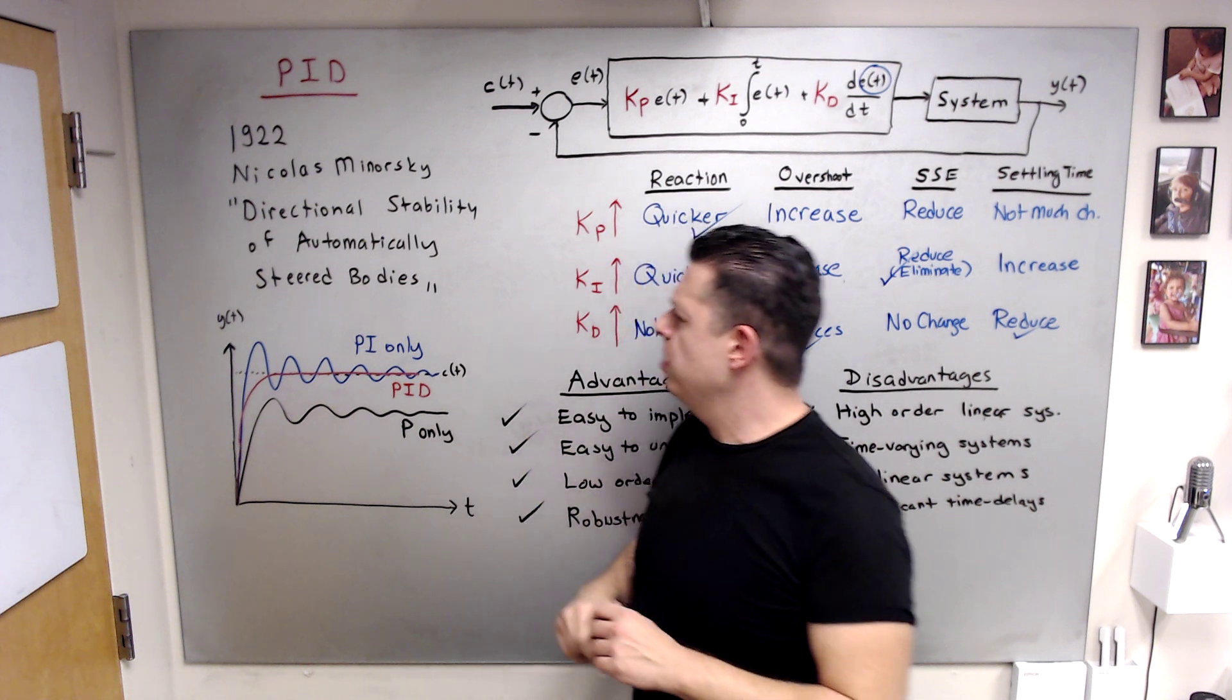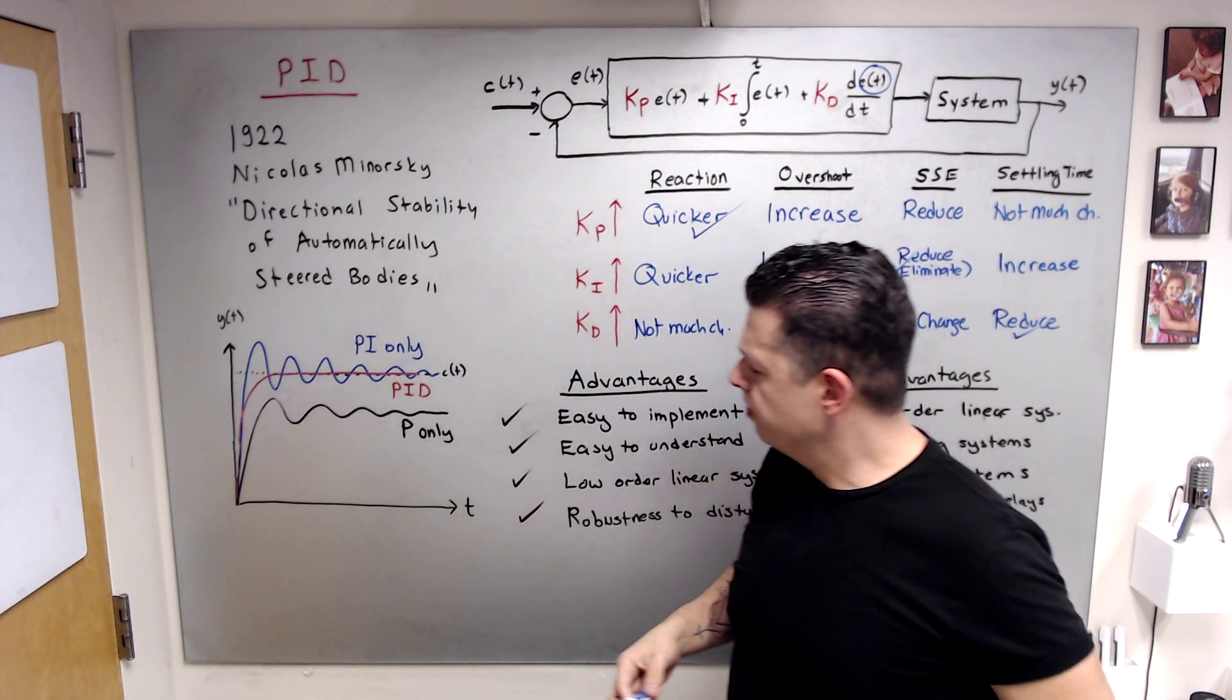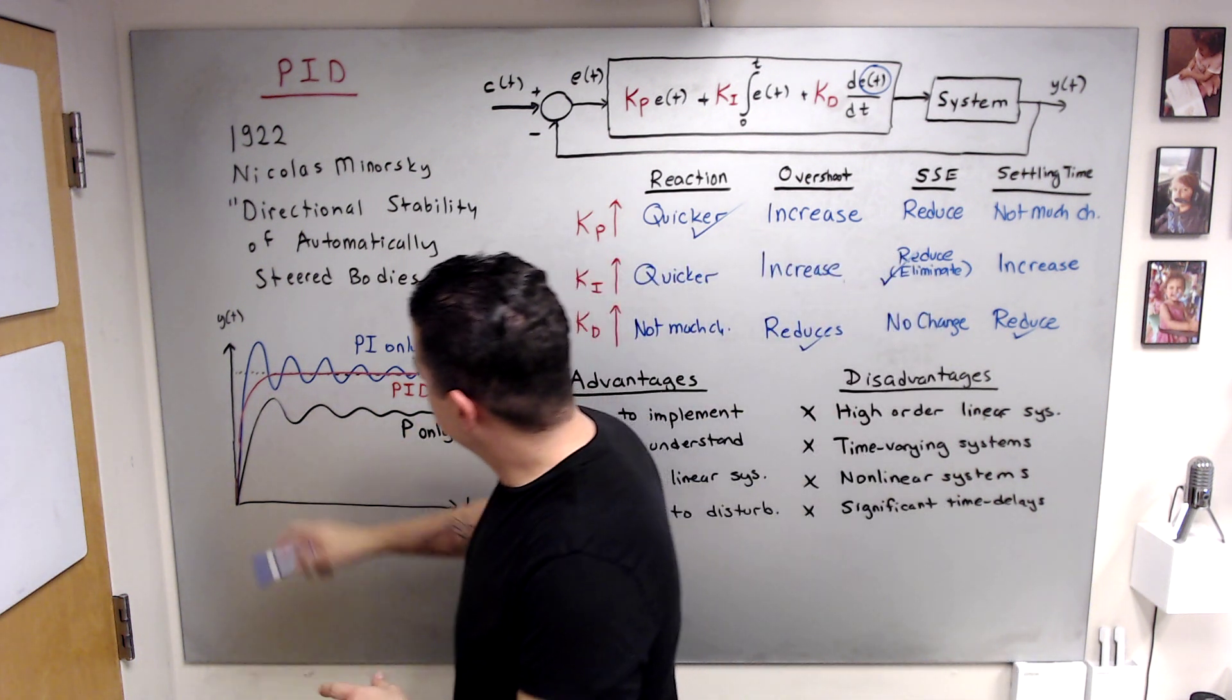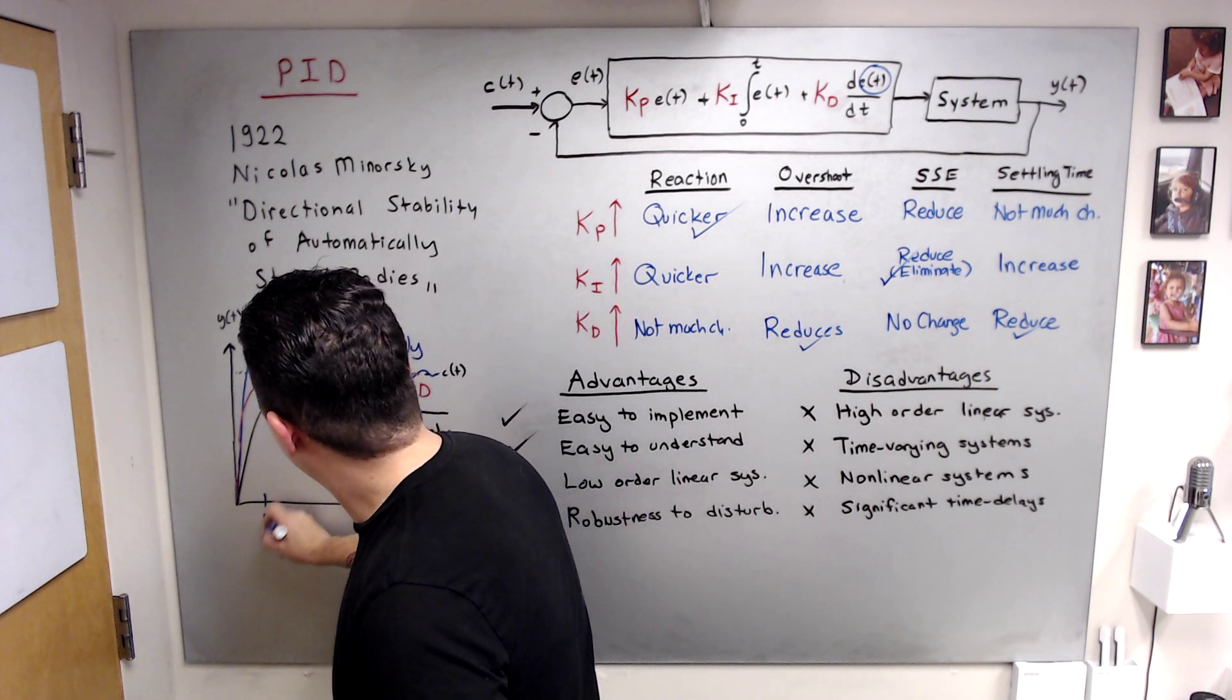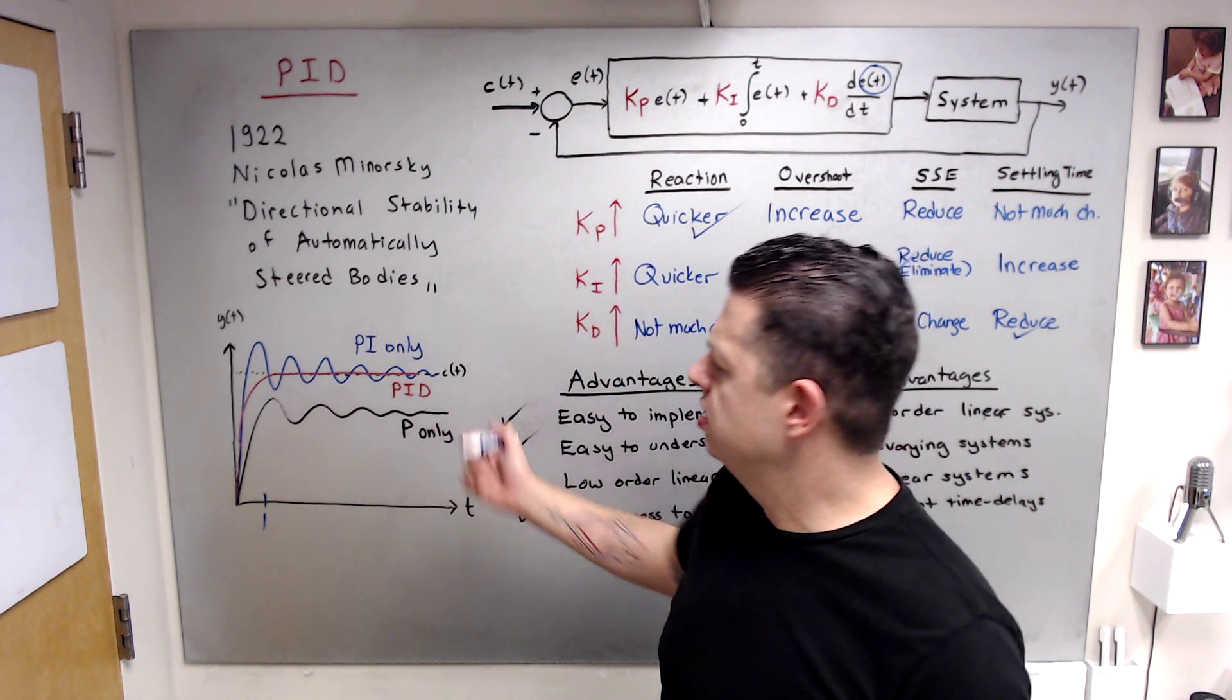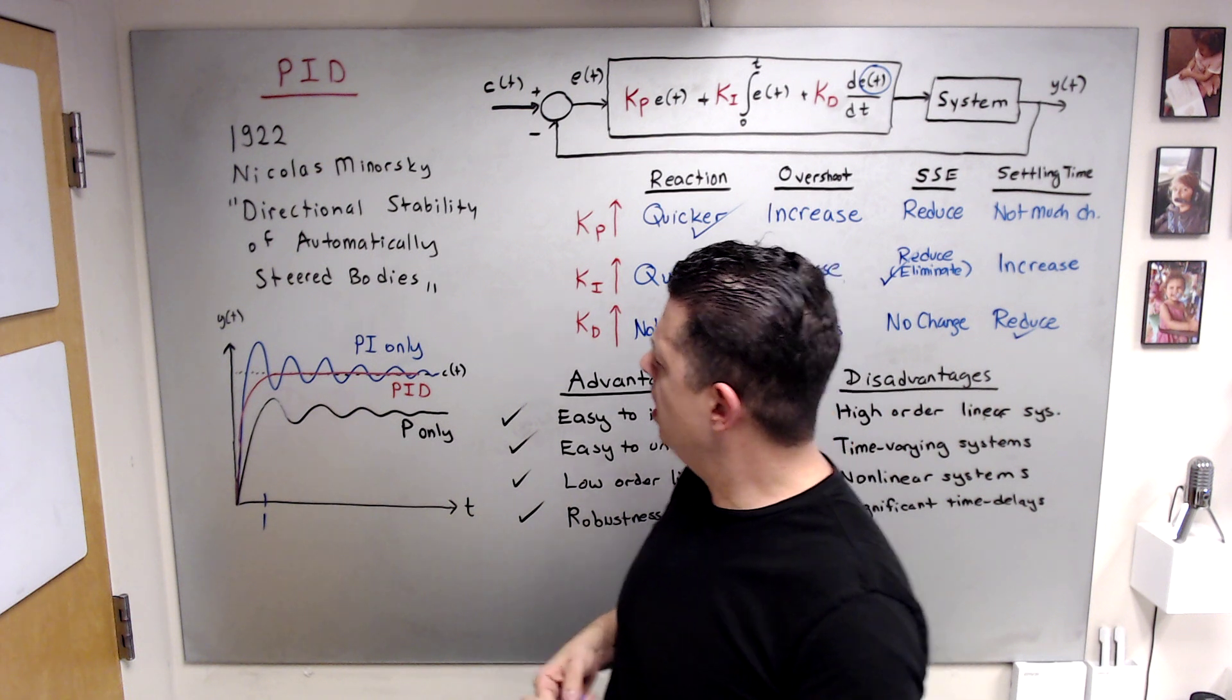All right. So this is what I mean by first tuning P. So now, for example, the dotted line is the command that we would like to track. In this case, constant. Let's say when you first set Ki zero, Kd zero and start increasing Kp, let's say you are satisfied with this response only with proportional controller. Rise time around, say, one second. This will depend on the system. If you are controlling a fast system versus slow system. So for the purpose of this discussion, let's say one second. It is a nice quick reaction.